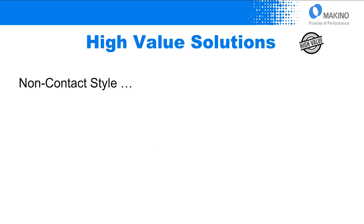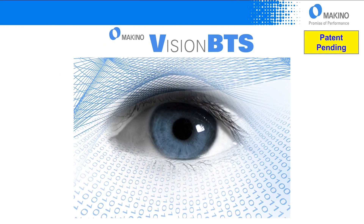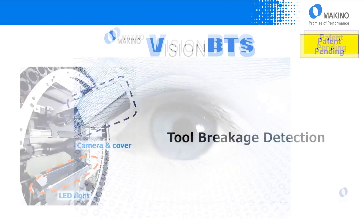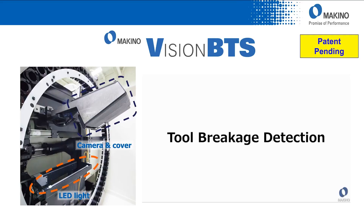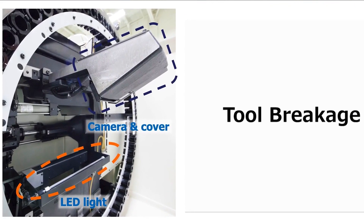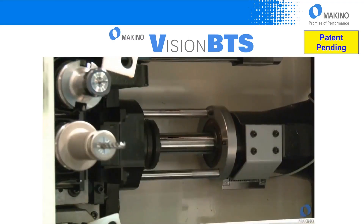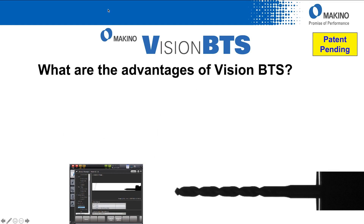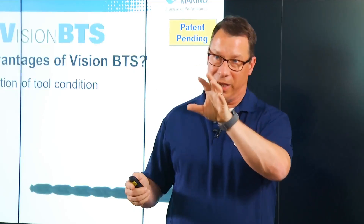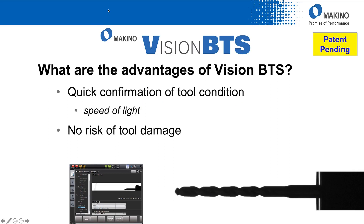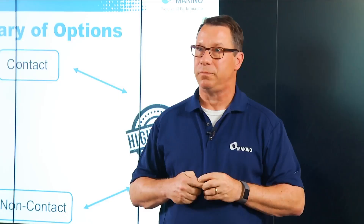The alternative certainly exists here — the non-contact style. The solution that Makino offers is what we call Vision BTS, basically using cameras to look at the tools as they come out of the machine over on the tool magazine side, to look for tool breakage. The system consists of a backlight, a background — which typically is going to be the backside of the shutter door — and the camera itself. The tool change executes, a picture is taken of the tool, and that next tool is already in the spindle ready to go. It goes right into cycle — zero impact to the overall machining time. Advantages: quick confirmation, a tenth of a second operation, no risk of tool damage, and a very simple system with only one moving part.